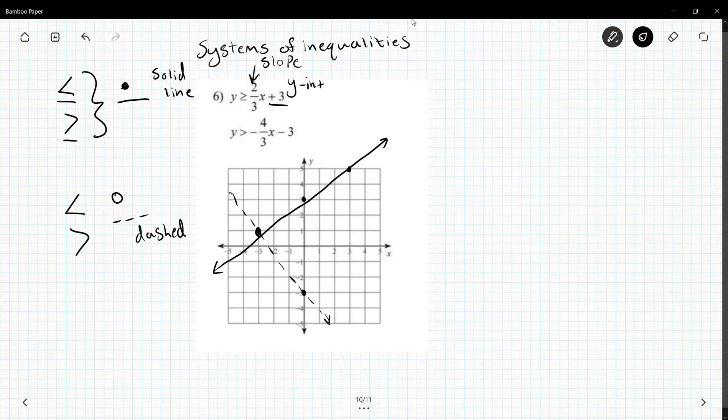Now we need to talk about where we have to shade so we have to do two separate tests. Neither of these lines have zero as a point so I can use zero as my test point. Zero is greater than or equal to two-thirds times zero is just zero. Zero is greater than three? Wrong. Remember that is this top line so since it was incorrect I'm going to shade above this line.